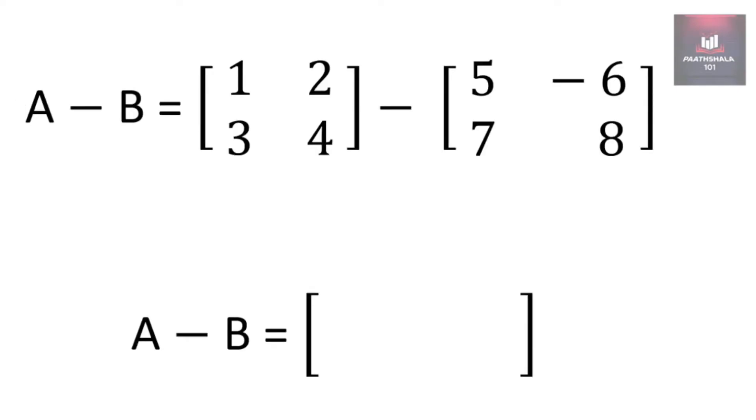Now A minus B, the resultant, for the first row, first column of the resultant, we will select first row, first column of A and first row, first column of B. So it will be 1 minus 5 which is minus 4.